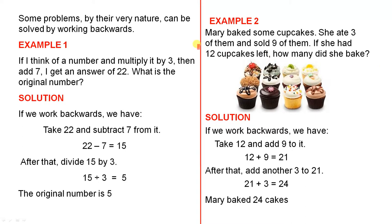Example 1. If I think of a number and multiply it by 3, then add 7, I get an answer of 22. What is the original number?